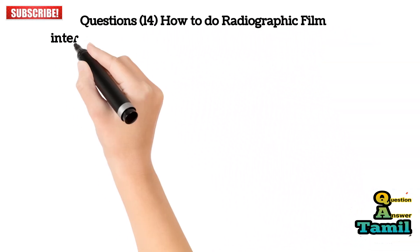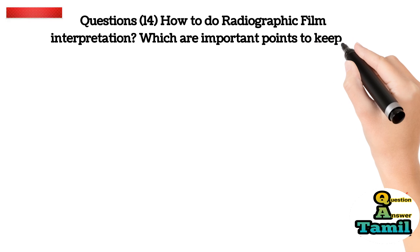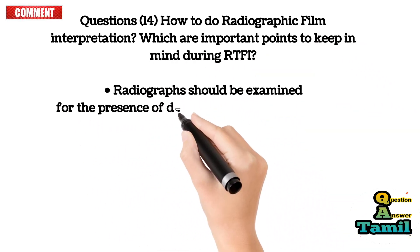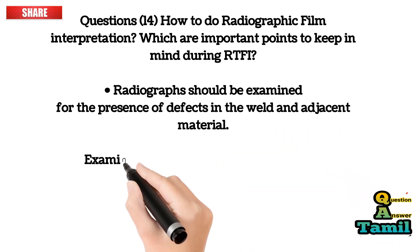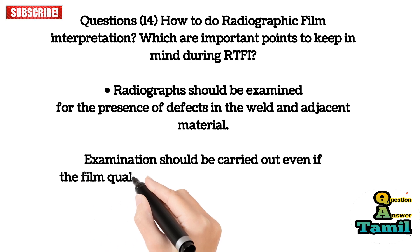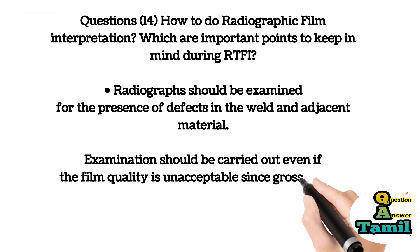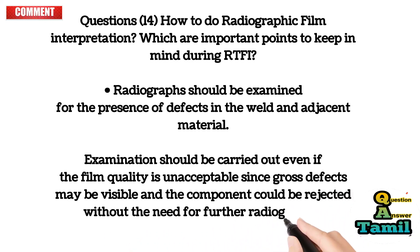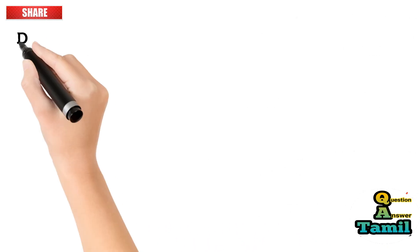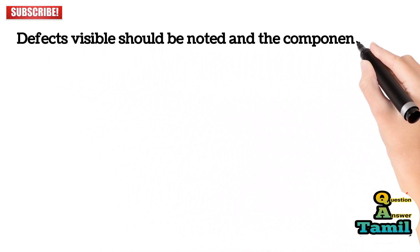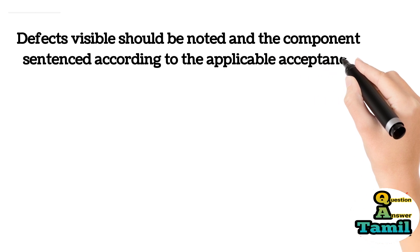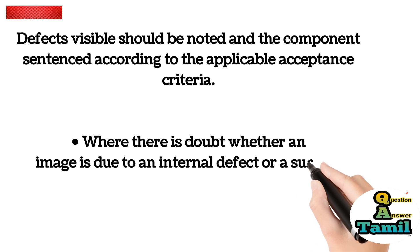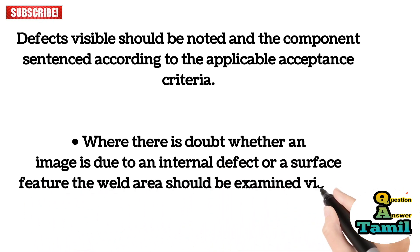Question 14: How do you perform radiographic film interpretation? Important points: Radiographs should be examined for the presence of defects in the weld and adjacent material. Examination should be carried out even if film quality is unacceptable, since gross defects may be visible and the component could be rejected without further radiography. Defects visible should be noted and the components sentenced according to applicable acceptance criteria. Where there is doubt whether an image is due to an internal defect or a surface feature, the weld area should be examined visually to establish the cause.